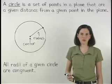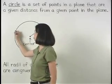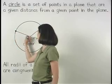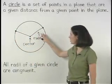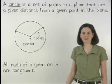Note that whichever point on the circle we choose, the distance to the center of the circle will always be the same. So we say that all radii of a given circle are congruent.